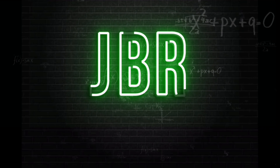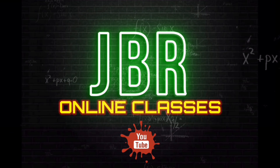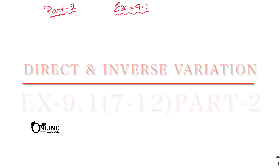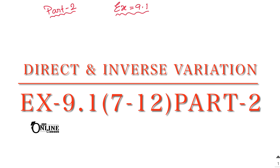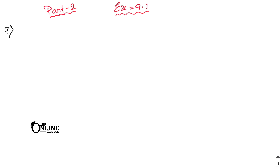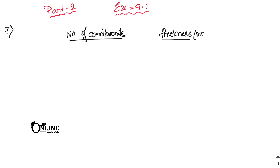Hello everyone, welcome back to JBR Online Classes. Please like, share, and subscribe. This is the second part of Exercise 9.1 — for the previous part, please check the description box. In sum number 7: if the thickness of a pile of 12 cardboard sheets is 45 millimeters, how many sheets of the same cardboard would be 90 centimeters thick? First, write down the number of cardboard sheets and thickness (in millimeters).